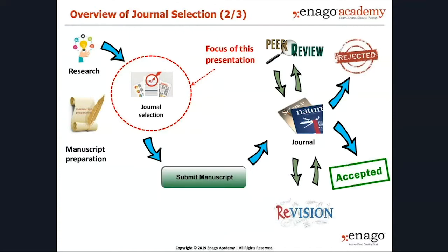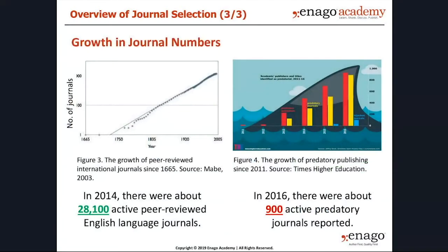Here is an illustration of the whole reviewing and publishing submission process: creating research, preparing and writing the manuscript, choosing a journal to submit to, having it peer reviewed and revising it, maybe being rejected and having to select another journal, and ultimately being accepted. The focus of today's presentation is the journal selection process — identifying specific titles and giving you tools to choose appropriate journals.